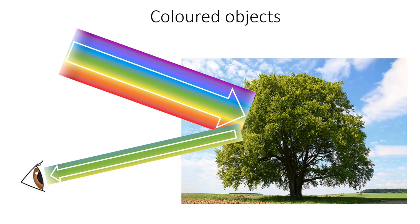Light from the sun, for example, contains all of the colors of the spectrum. However, when it strikes an object such as a tree, then only the green part of the spectrum is reflected and the object is perceived by the eye as green.